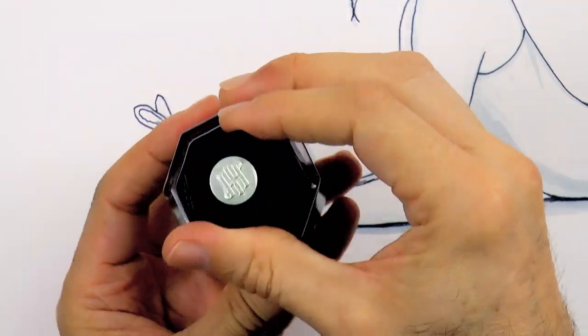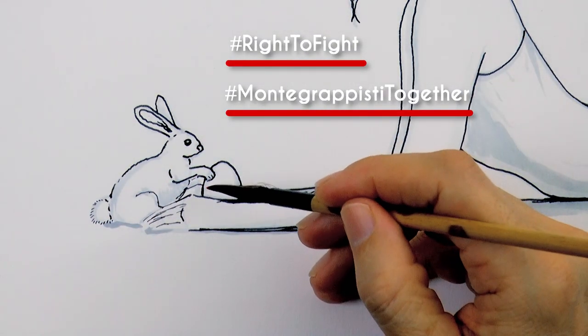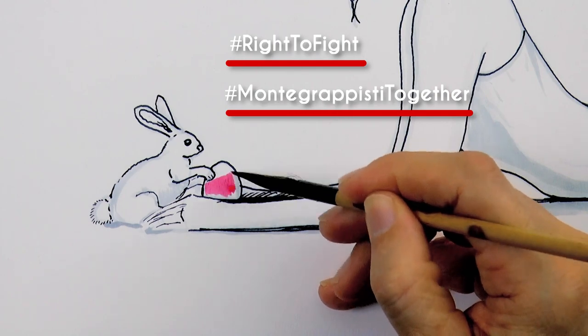I'll use this red ink to paint the egg. The hashtags are write2fight and Montegrappisti together.